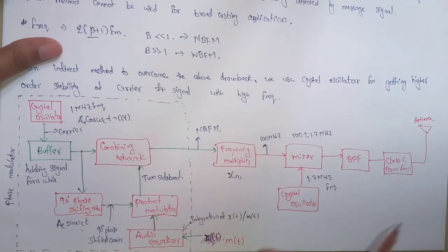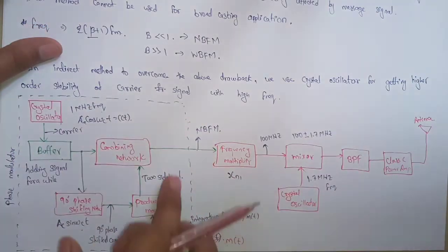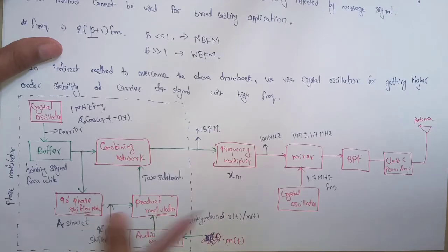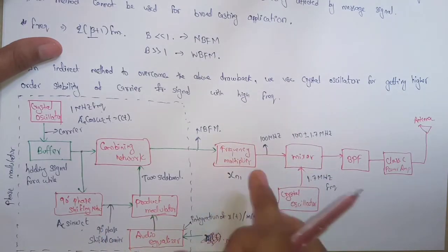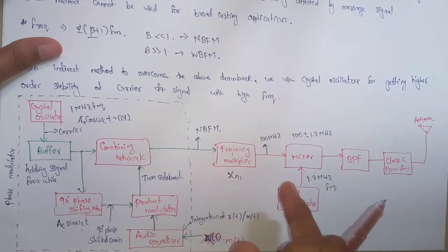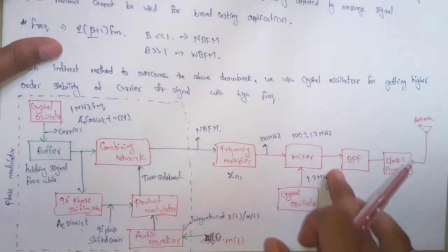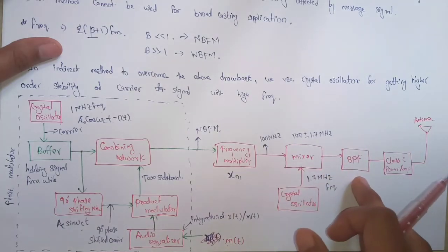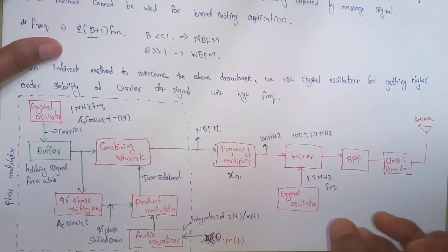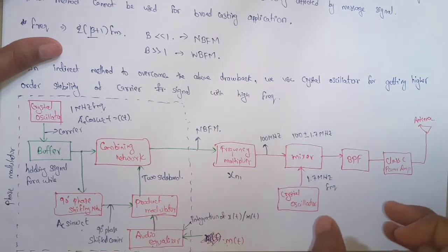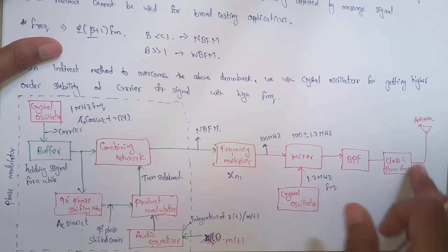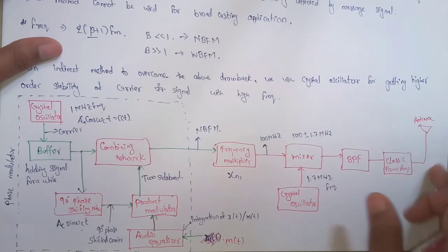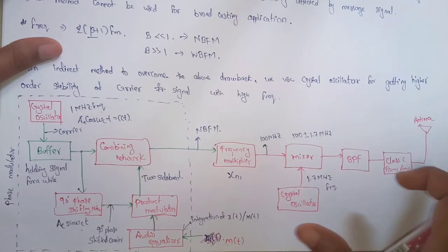To summarize: we generated narrow band FM using the phase modulator, used the frequency multiplier to increase its frequency, sent it to a band pass filter to select the required frequency signal, then to a Class C power amplifier, and then to the antenna.